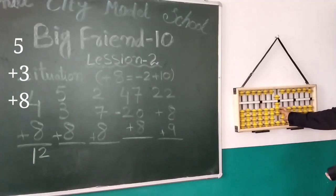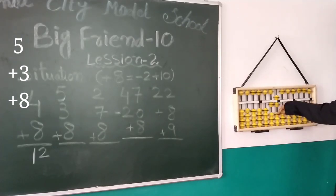What is our next question? 5 plus 8. 5 with index, 8 with thumb. Again we will ask Big Friend 10 to help us. So what is our answer? 16.